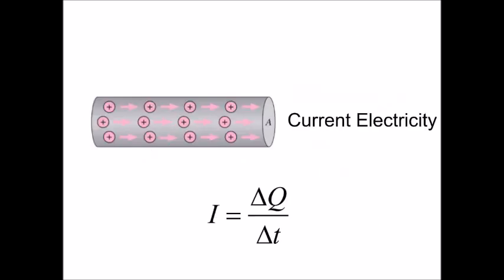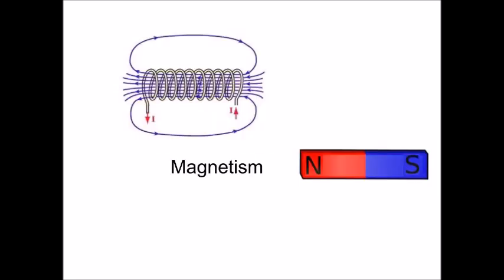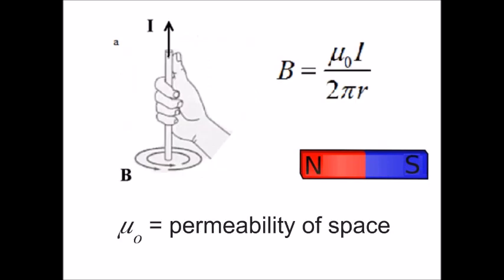Current is equal to charge divided by time — I = Q/t. We know what time is, so if we can find a good unit for charge, we can define current in amperes. On to magnetism: it's easier to talk about the magnetic field around a current-carrying wire than to compare bar magnets. The magnetic field of a straight wire is B = μ₀I / (2πr). The stronger the current, the stronger the field; the further away, the weaker. This introduces μ-naught, the permeability of space.